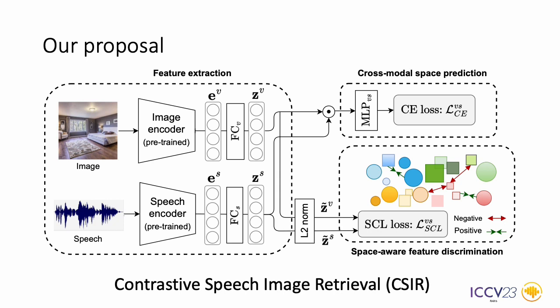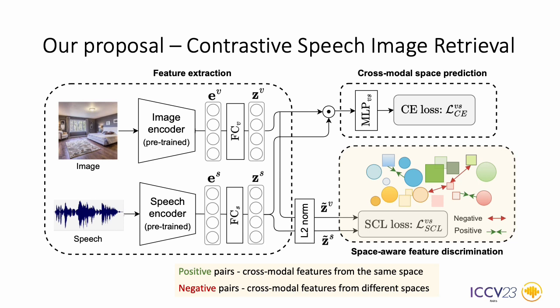The architecture is shown in this block diagram, where we first embed multimodal inputs. We then introduce two heads, of which one is trained with the standard cross-entropy loss for predicting the space, and the other is trained with contrastive loss. In particular, the positive pairs refer to image and audio signals captured in the same space, while the negative pairs are formed if the image and audio correspond to a different space.